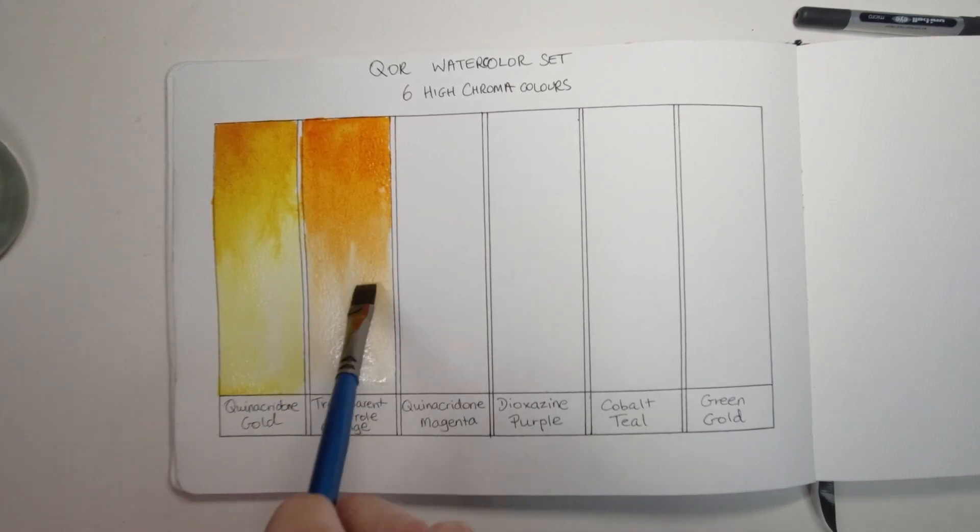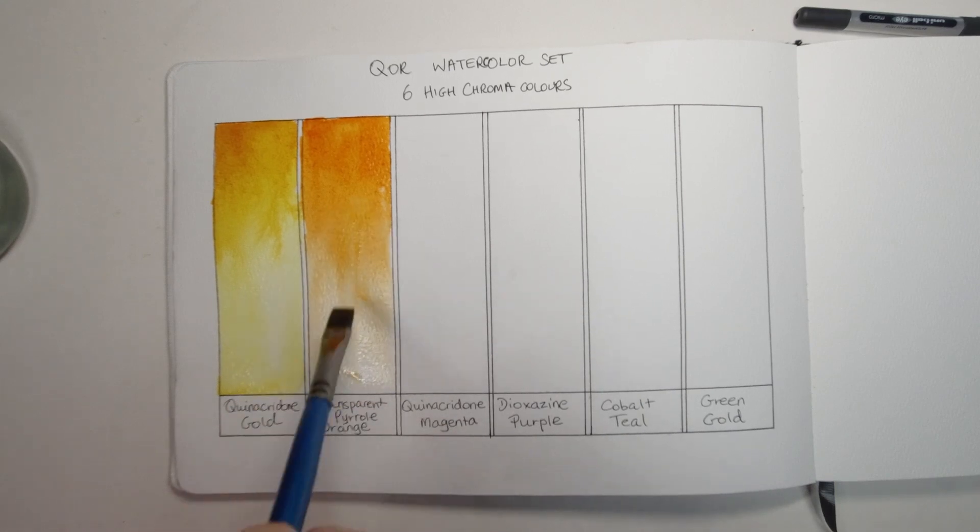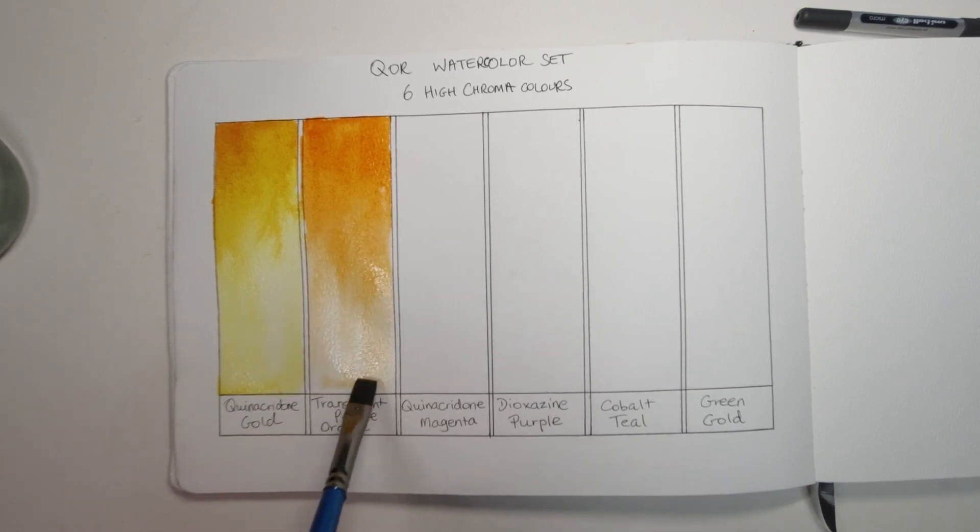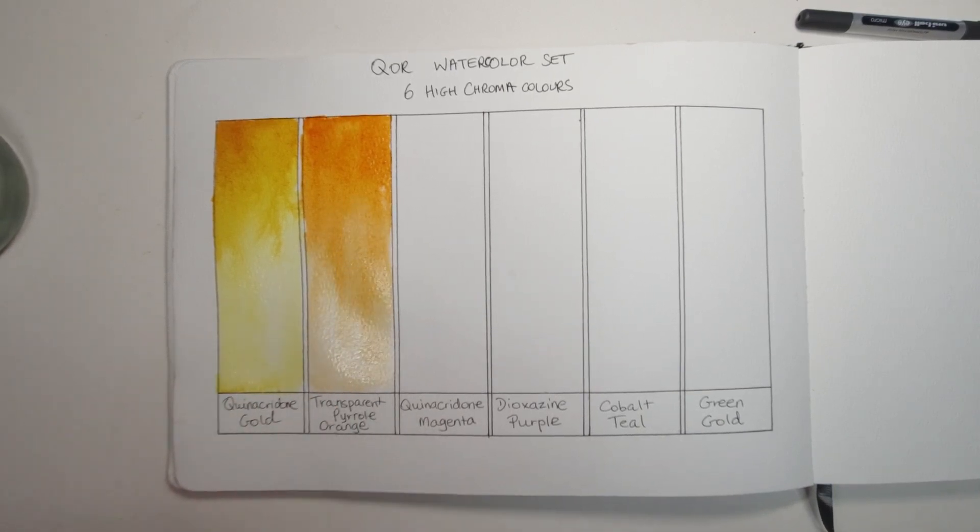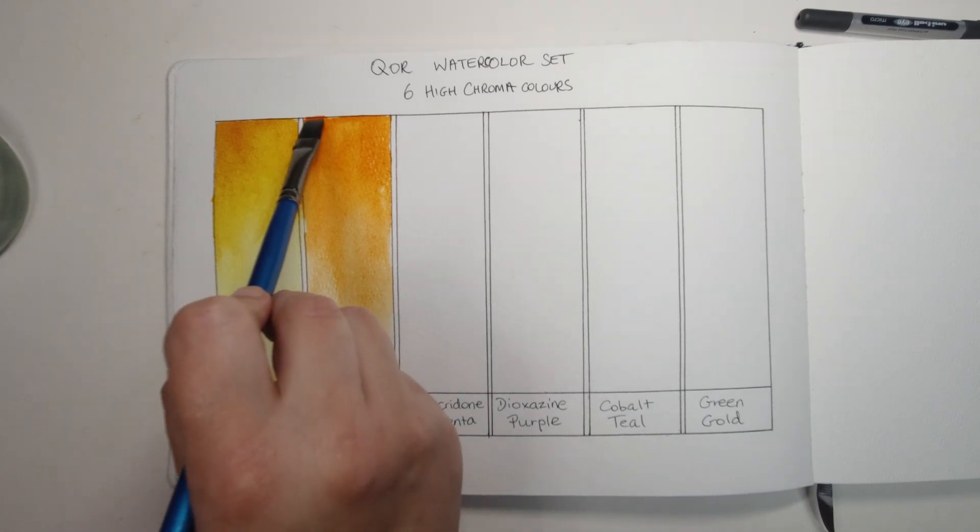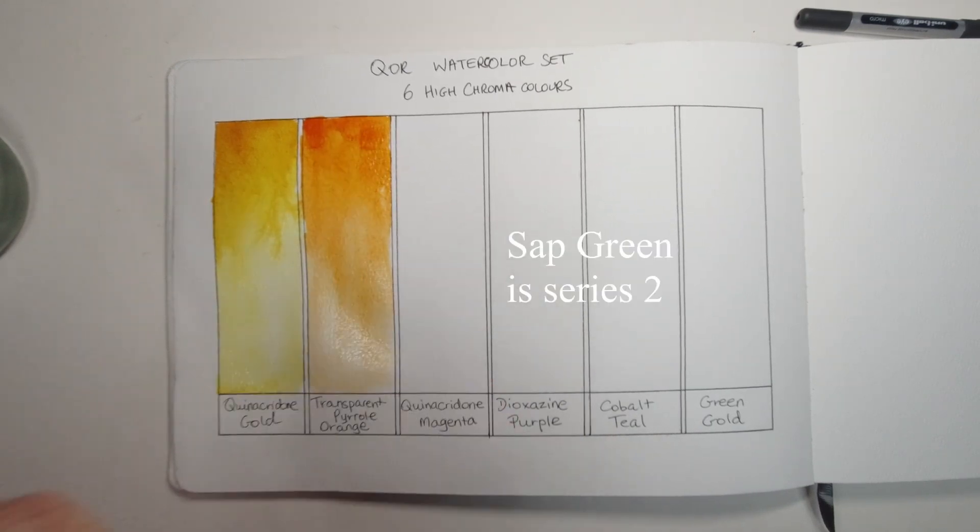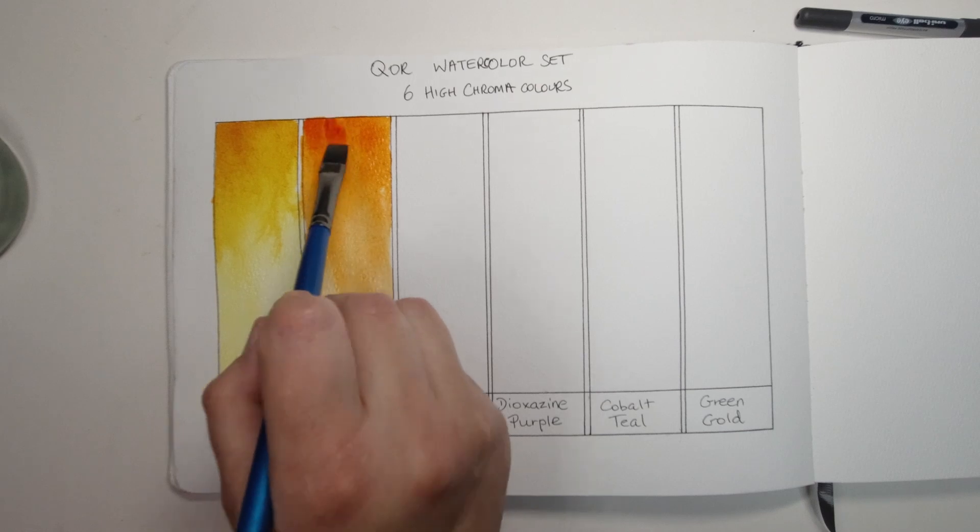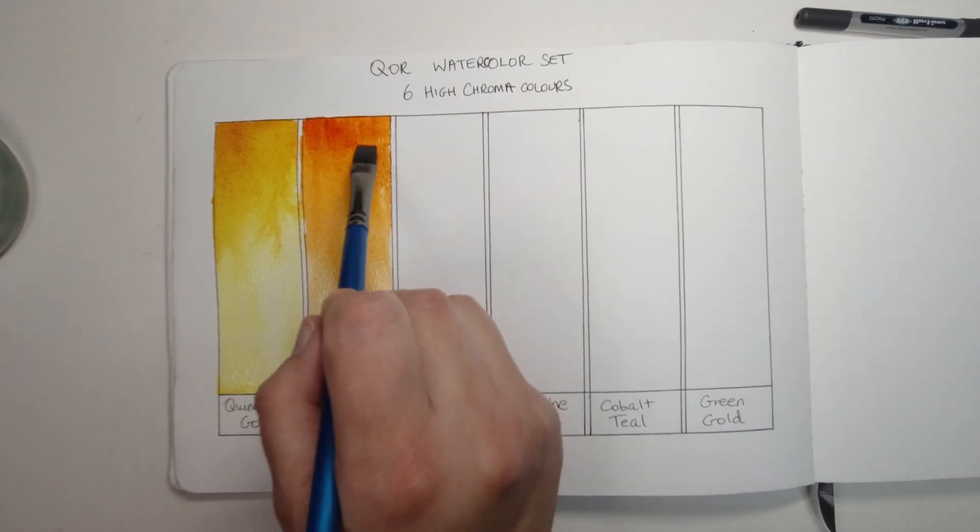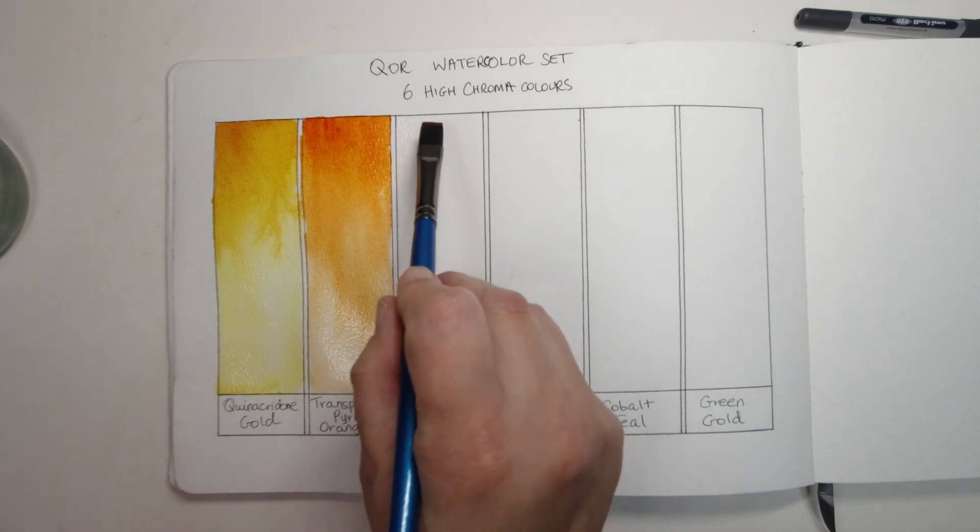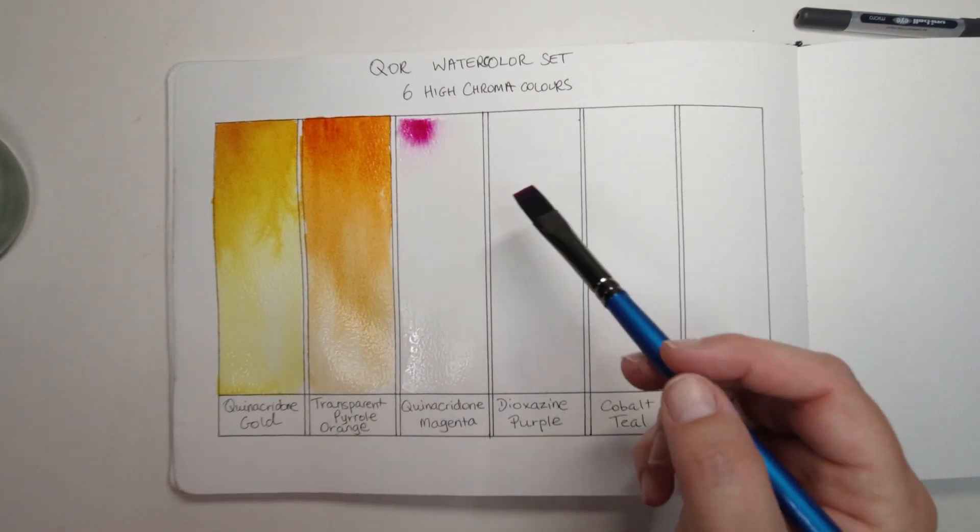Which is pretty good considering this cost the same as the earth tone set and the earth tone set only really had series 1 and possibly one series 2, I'll have to double check that. I'm just adding a little bit of darker tone here just so we can get more of a gradient going on.